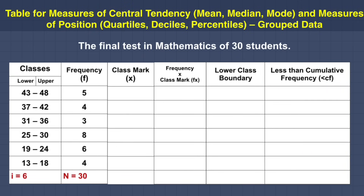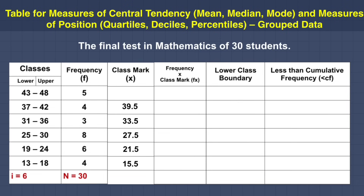Complete the column of class mark, also called the midpoint. To find the midpoint, add the class limits and divide by 2. Starting from the bottom: 13 plus 18 divided by 2 equals 15.5. Then 19 plus 24 divided by 2 equals 21.5. Or simply add the class interval of 6 each time: 15.5, 21.5, 27.5, 33.5, 39.5, 45.5.